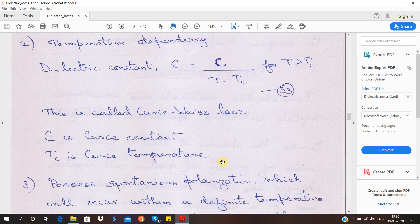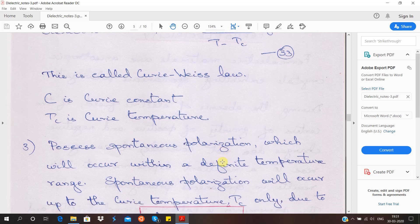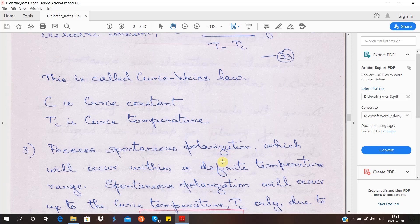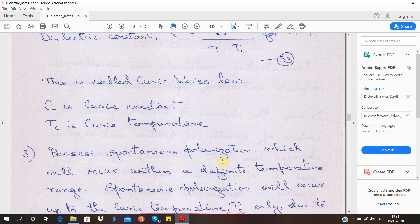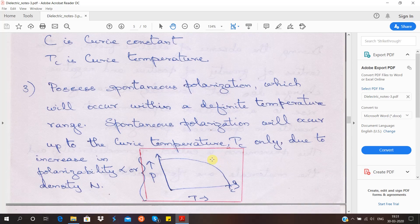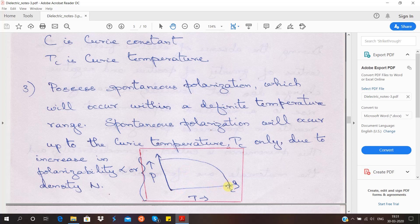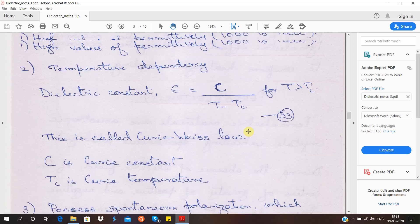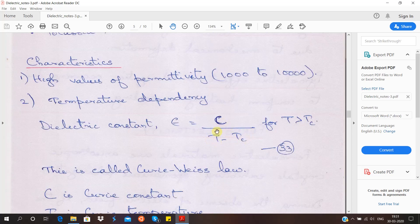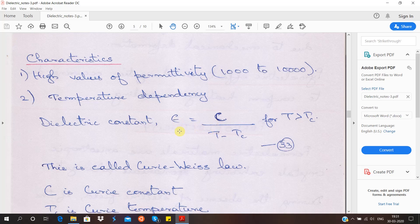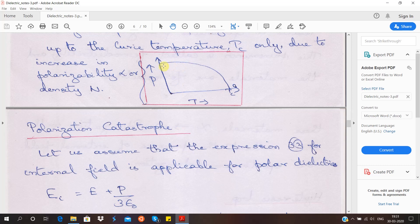It also has spontaneous polarization, and it occurs within a definite temperature range, like the Rochelle salt example. Polarization occurs only up to the Curie temperature. When temperature becomes equal to Curie temperature, T minus Tc becomes zero and the dielectric constant becomes infinite. So polarization is inversely proportional to temperature and goes till the Curie temperature.